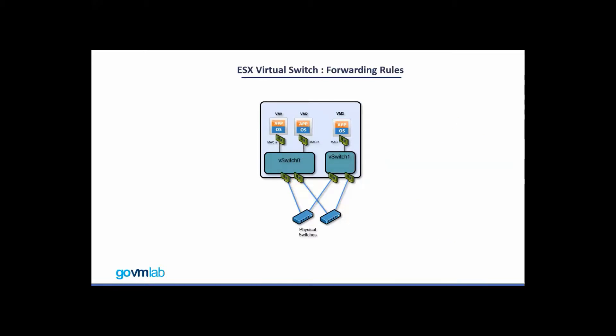The supported scenario when VM1 generates a ping to VM2 is: the packet from VM1 is forwarded to vSwitch 0, and vSwitch 0 internally forwards the packet directly to VM2's VNIC. This is the supported IO path — when two VMs are running on the same virtual switch, the traffic will never go over the uplink. The packet is forwarded by the virtual switch itself. This is what we call intraswitch networking.